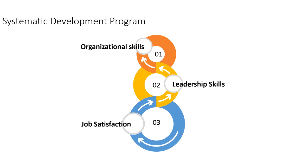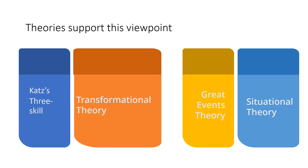The systematic way of developing leadership skills from within leads to the job satisfaction of an individual. Different theories support the viewpoint of developing leadership skills from within — theories like Transformational Theory, Great Events Theory, Situational Theory, and Katz's Three-Skill Theory. The Great Events Theory explains that a crisis or important event may bring out extraordinary leadership qualities in an ordinary person. The Transformational Leadership Theory explains that people can choose to become leaders by learning leadership skills — this is the most widely accepted theory today in organizational behavioral science.